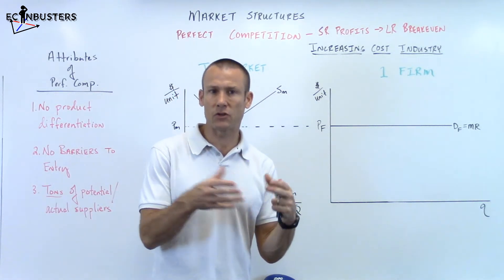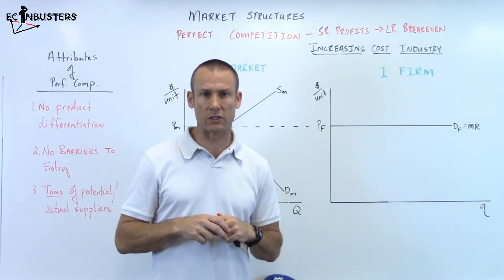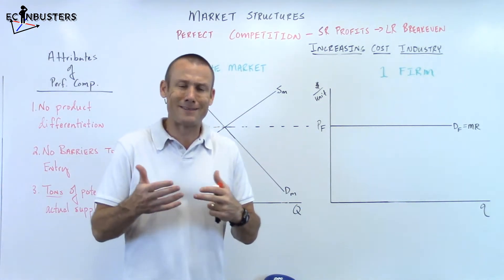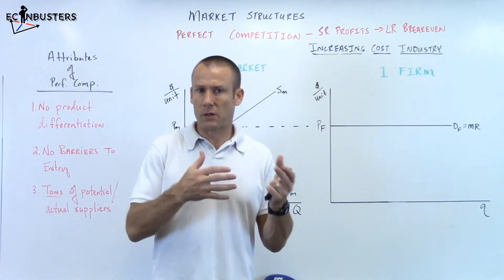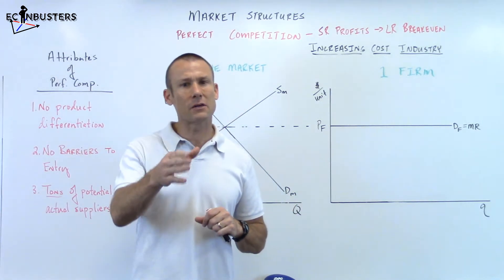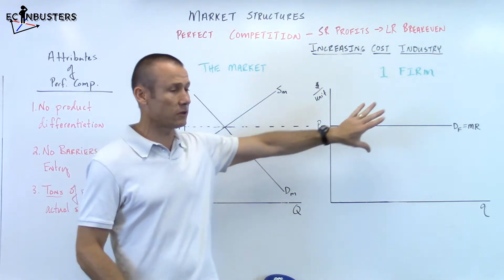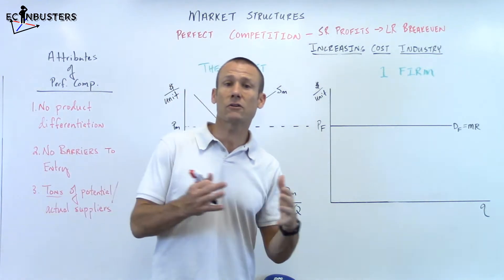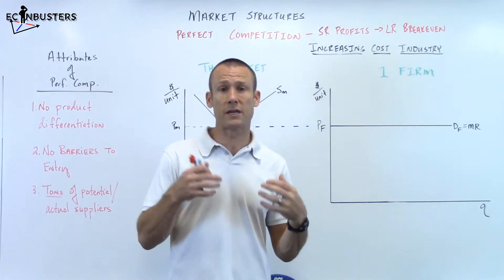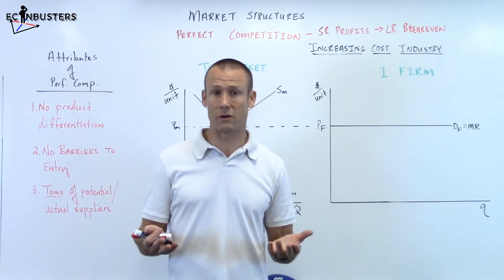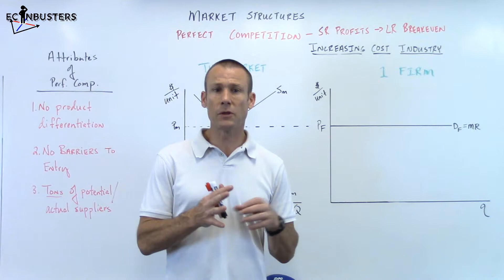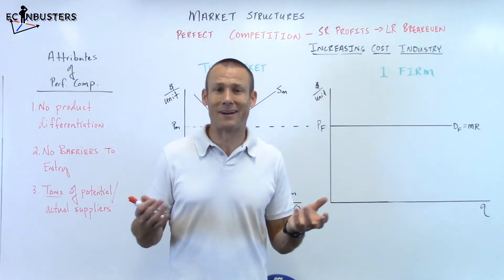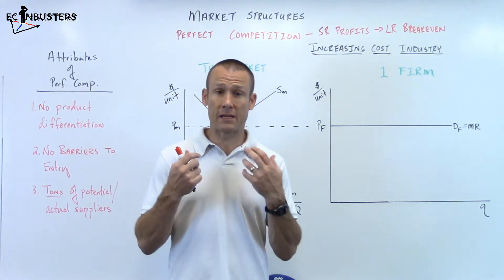Now, just like I've already kind of mentioned, it's not the default of most professors in college nor the AP test. The default is a constant cost industry, which actually doesn't make a lot of sense. A constant cost industry is where firms are making profit, suppliers enter, so the supply market shifts right — there's an increase in demand for the inputs to production — yet the prices of the inputs to production don't change at all. The costs remain constant. Why is that the default? Because it's simpler. That's it. The graph is cleaner and it's just simpler.